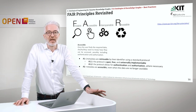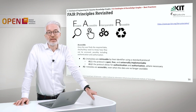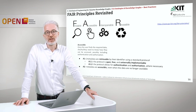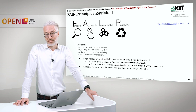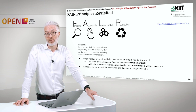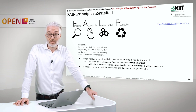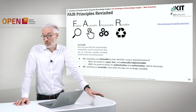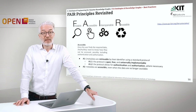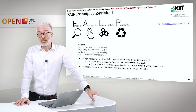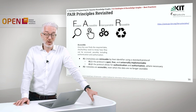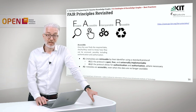Accessibility: once the user finds the required data, they need to know how it can be accessed, possibly including authentication and authorization. Metadata have to be retrievable by their identifier using a standard protocol. For our Semantic Web tools, we have an IRI and the HTTP protocol — everything very standard. The protocol is open, free, and universally implementable, and it allows for authentication and authorization wherever necessary. Metadata are accessible even when the data are no longer available — though this is more difficult to comply with in practice.